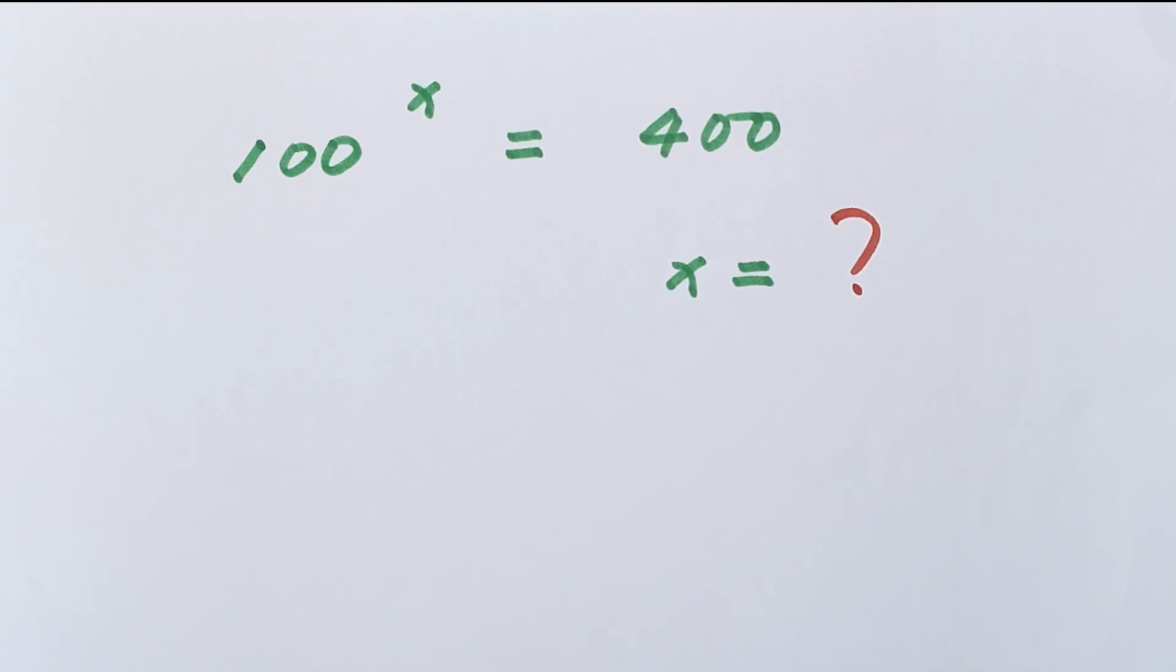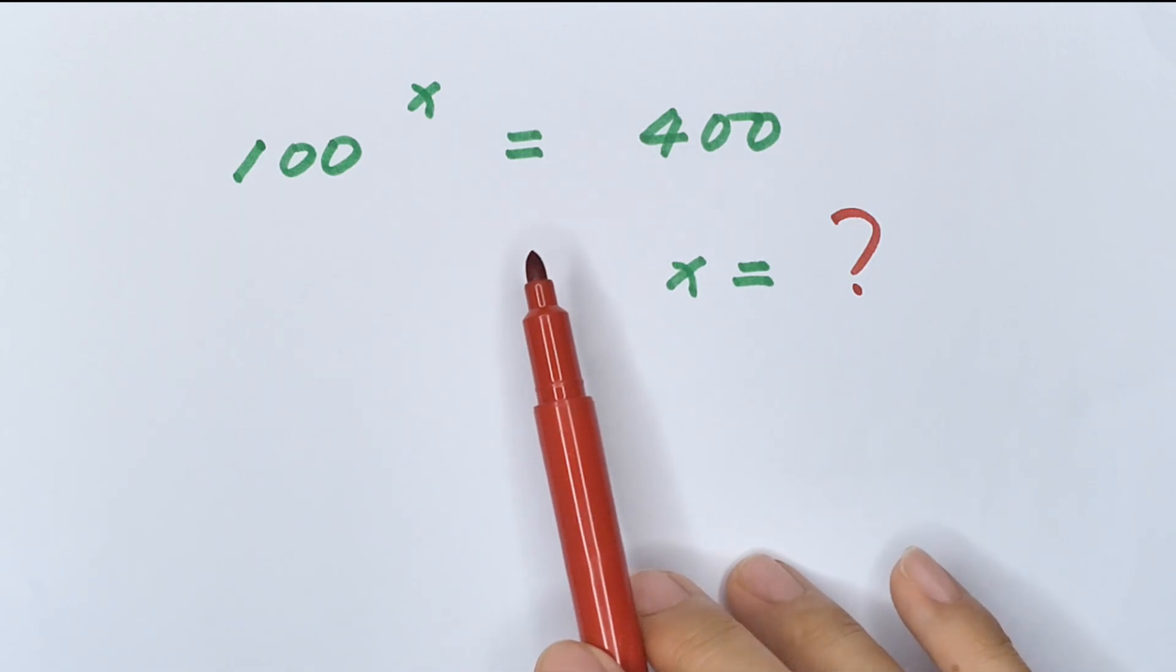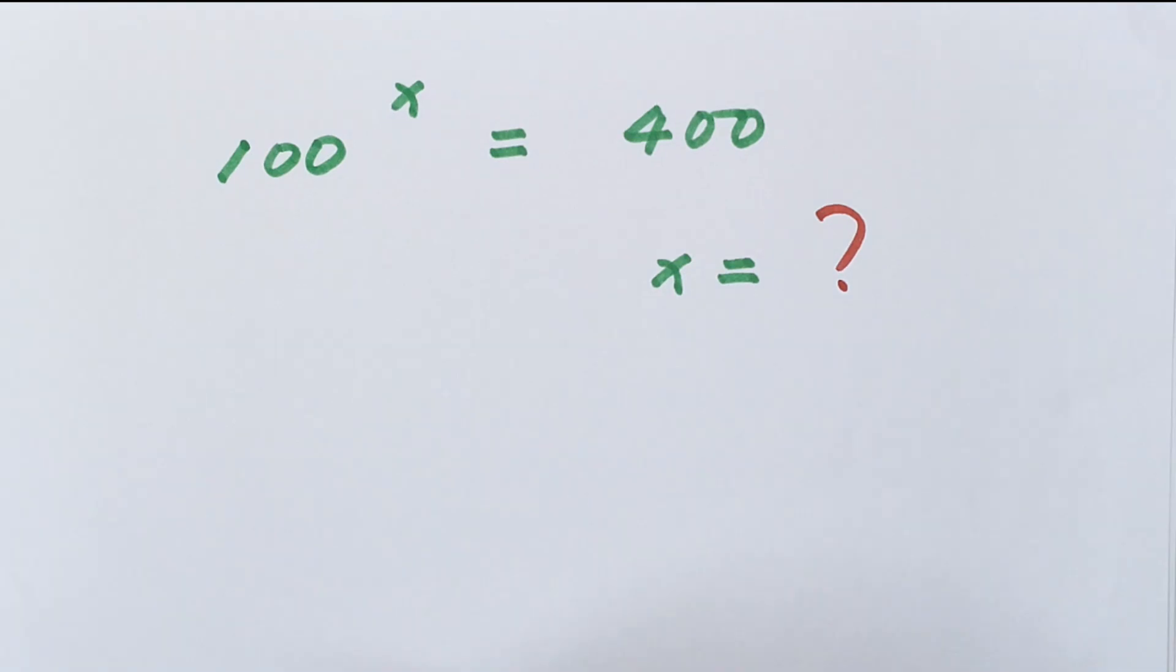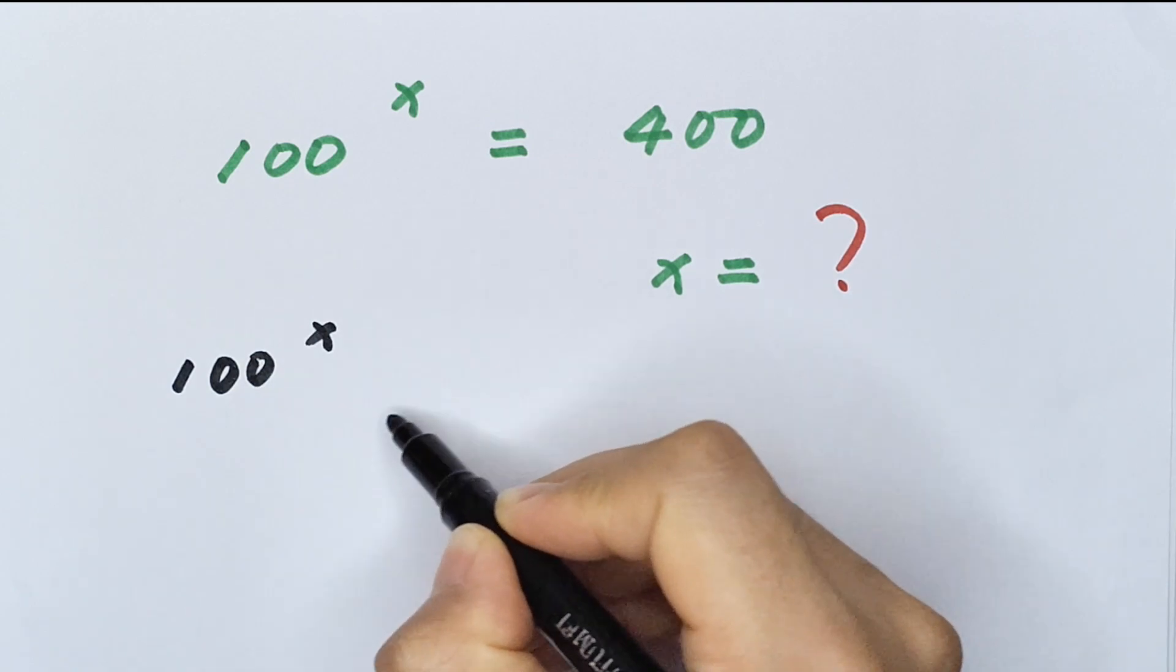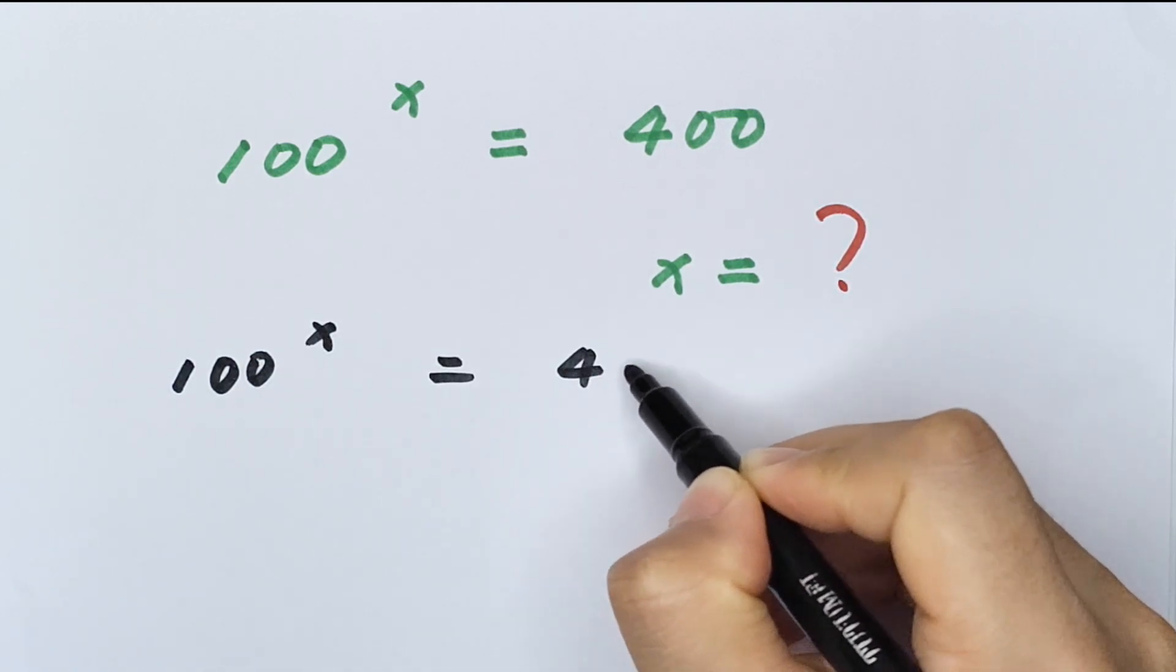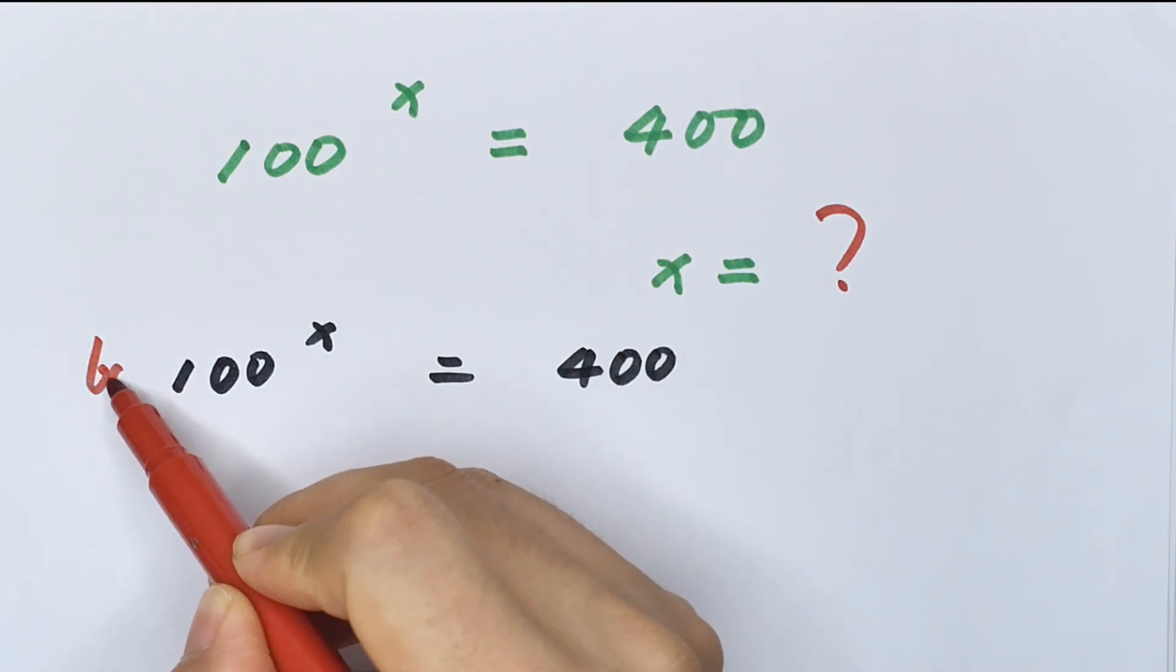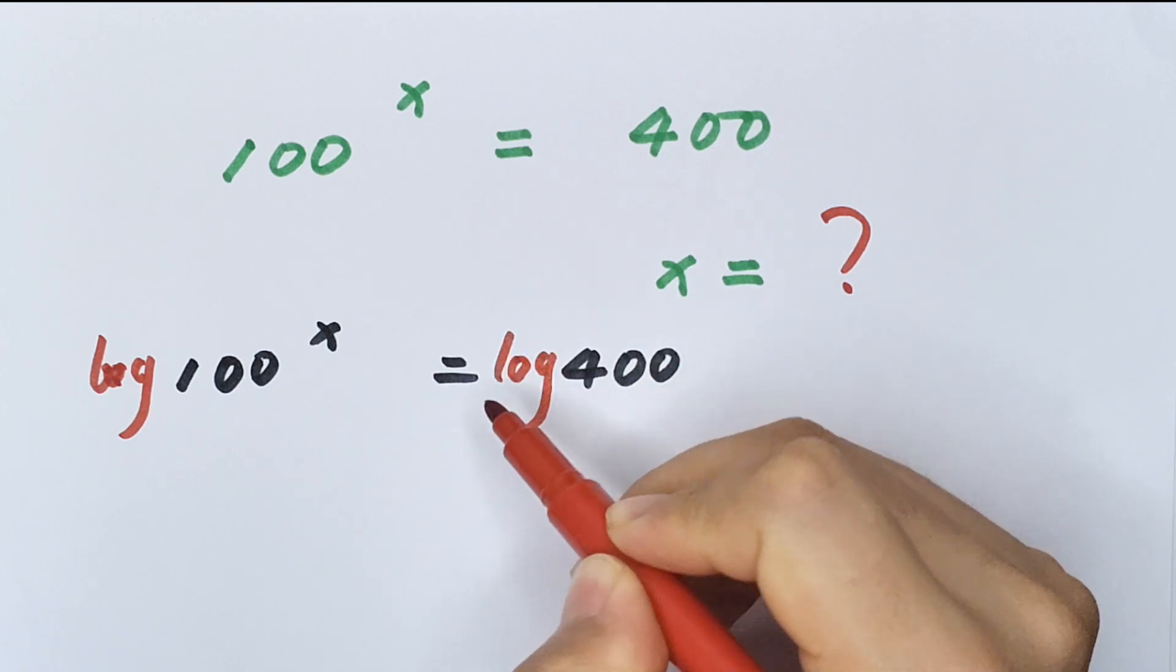Hello everyone, welcome to Math4U. How to solve 100 to the power of x equals 400. To find the value of x: 100^x = 400. First, we apply log on both sides. We know log_b(a) equals a times log(b).